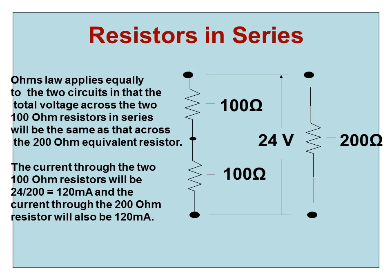The current through the two 100 ohm resistors will be 24 divided by 200 or 120 milliamps and the current through the 200 ohm resistor will also be 120 milliamps.